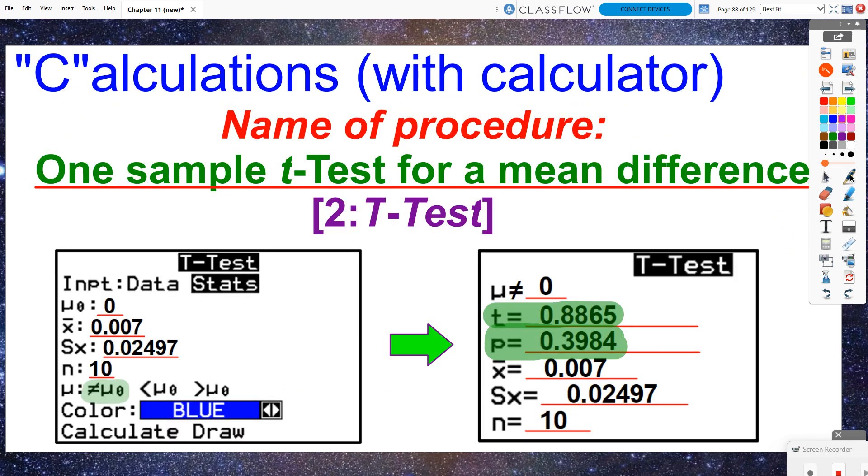If I want to use the calculator command instead, I got to name the procedure properly. I can either call it a one sample t-test for a mean difference, or another way that we had stated this was we could technically call it a paired t-test for a mean difference. I like writing it as a paired t-test for a mean difference because this is written differently.